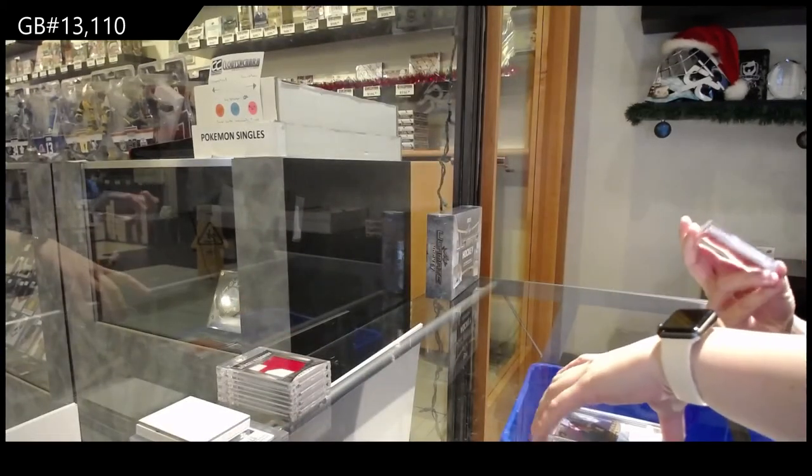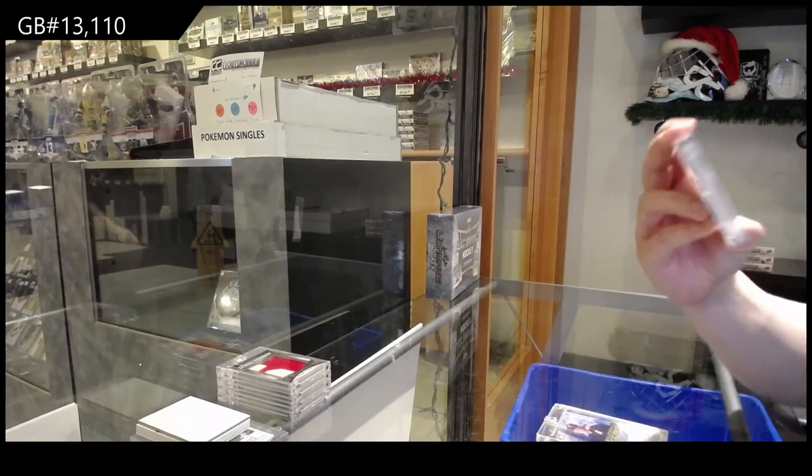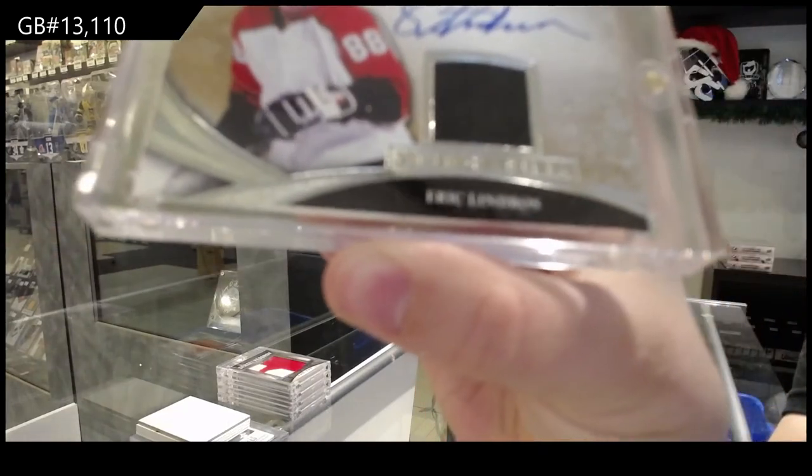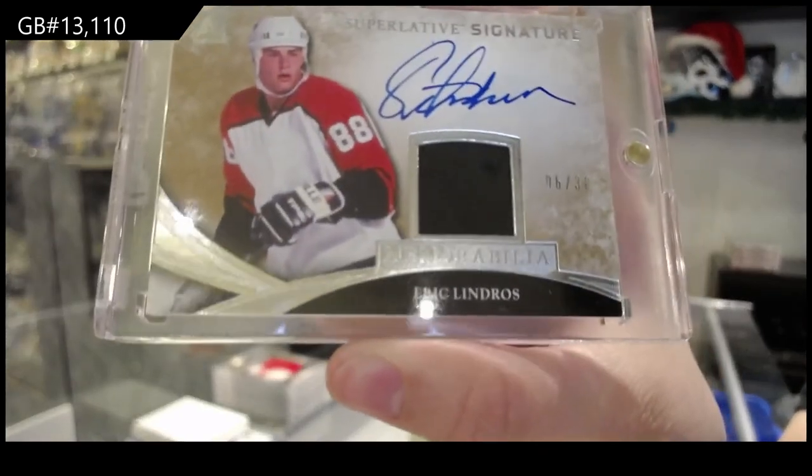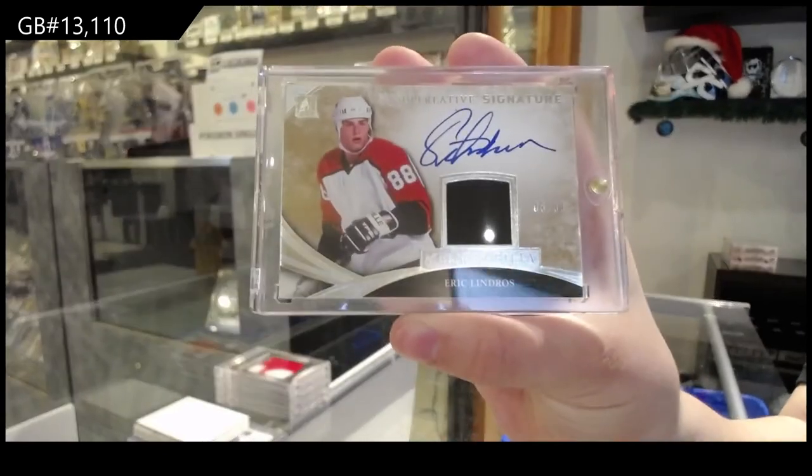And we've got a Superlatives Signatures jersey auto, numbered 6 of 30 for the number 6 spot, Eric Lindros. This is a pretty darn good box.